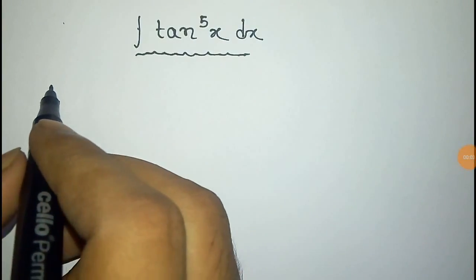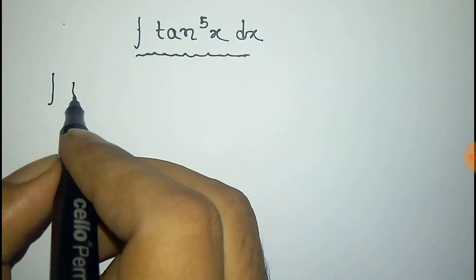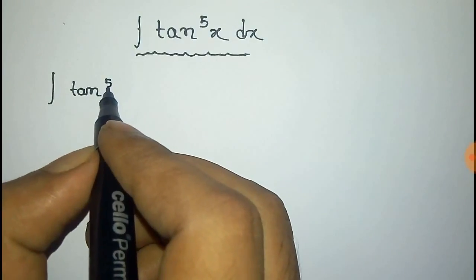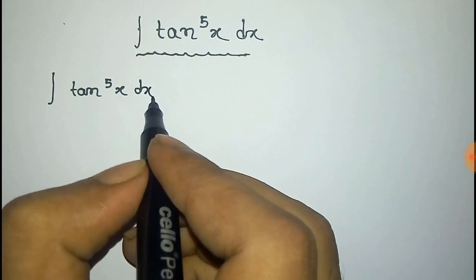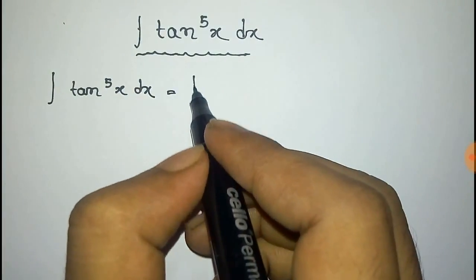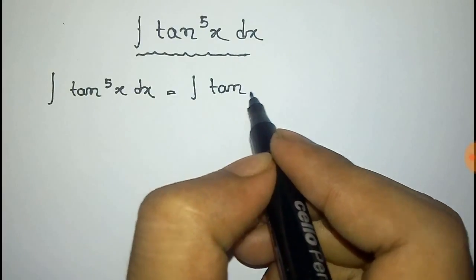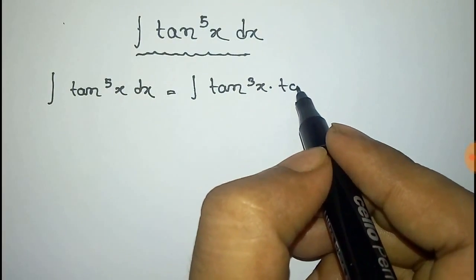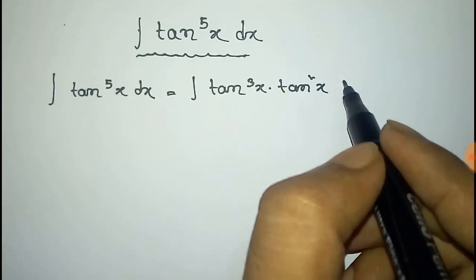We have to integrate tan to the power 5x dx. We can write this tan to the power 5x as the product of tan cube x into tan square x dx.